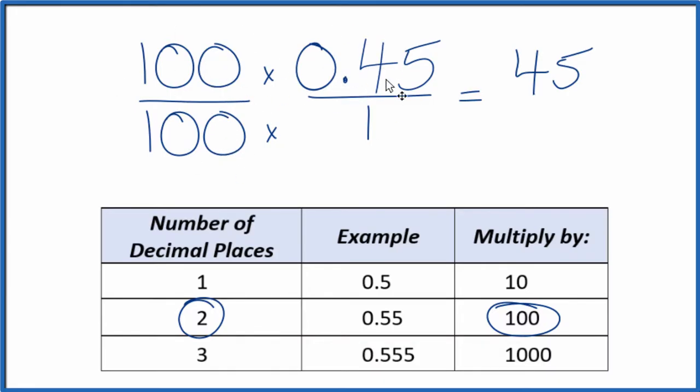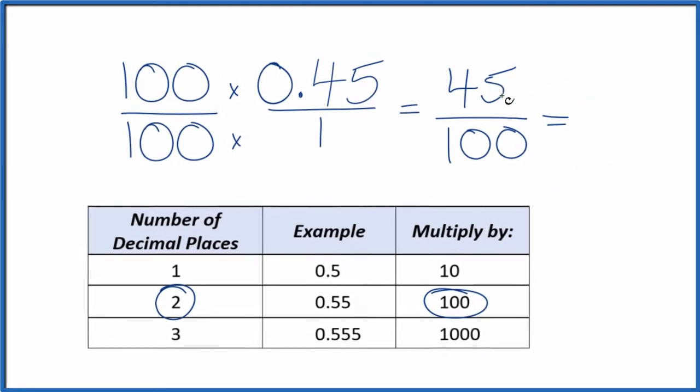We haven't changed the value, just the way it's represented. So 100 times 1, that is 100, and now we have a fraction. We could reduce this to simpler terms because 5 goes into 45 and 100. 45 divided by 5, that's 9.